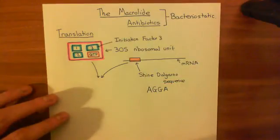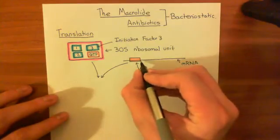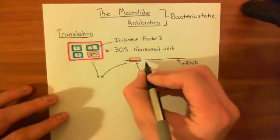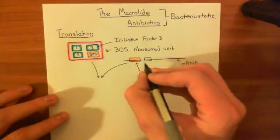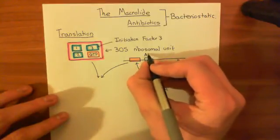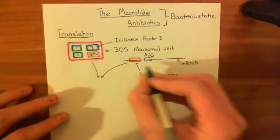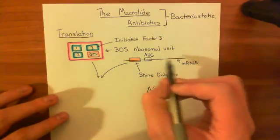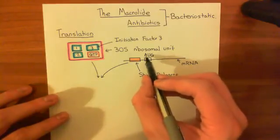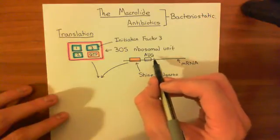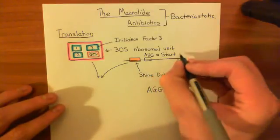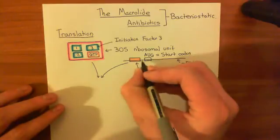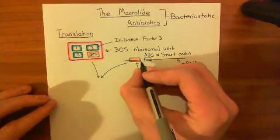The first tRNA is also going to come in. Generally around 8 to 10 organic bases downstream along the mRNA of the Shine-Dalgarno sequence, there will be the start codon — the combination of organic bases A, U, G. This is mRNA, so you don't have thymine in RNA; instead you have uracil. Adenine followed by uracil followed by guanine is the start codon — that tells you to start the process of translation, and it will generally be around 8 to 10 organic bases downstream of the Shine-Dalgarno sequence.